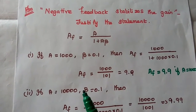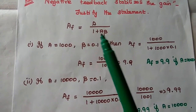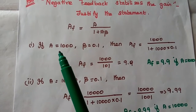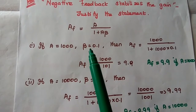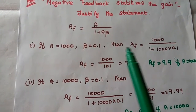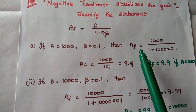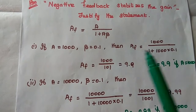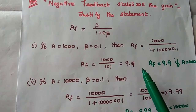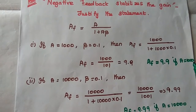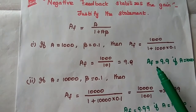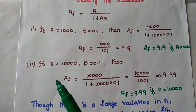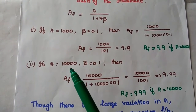We consider two different scenarios. In the first case, gain without feedback A = 1000 and β = 0.1. The gain with feedback AF = 1000 / (1 + 1000 × 0.1) = 9.9.